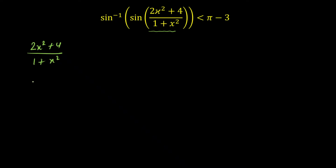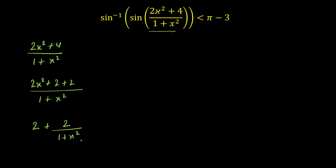I am going to write (2x² + 4) / (1 + x²) as (2x² + 2 + 2) / (1 + x²), which simplifies to 2 + 2/(1 + x²). Now I have to estimate the value of this expression — that is our input — for x belonging to R. So for x ∈ R, I am going to check the value of 2 + 2/(1 + x²).